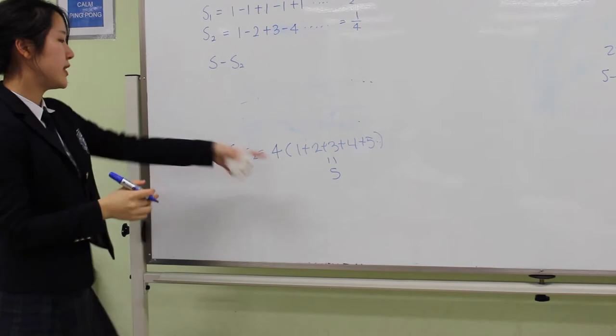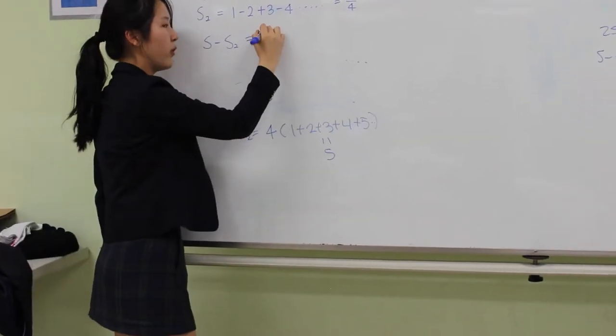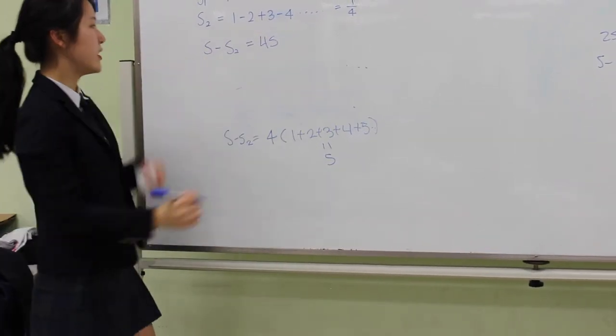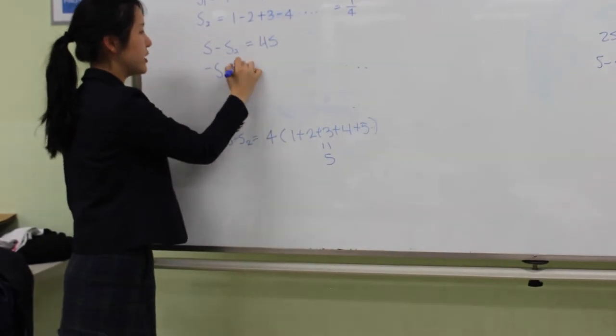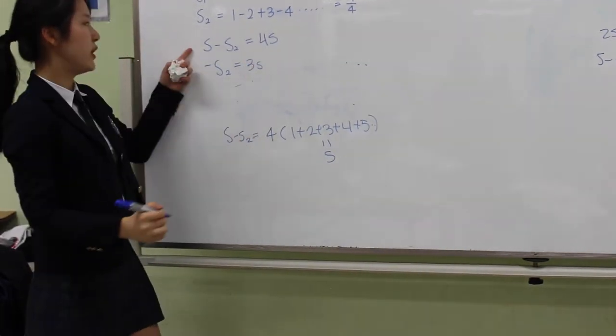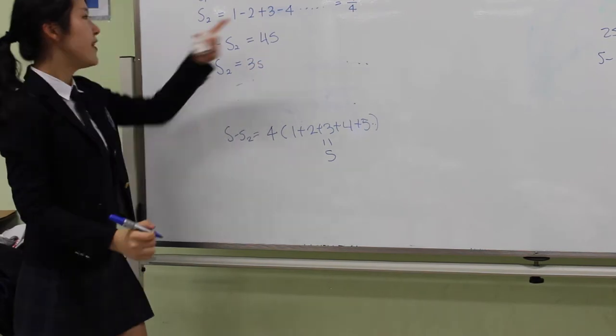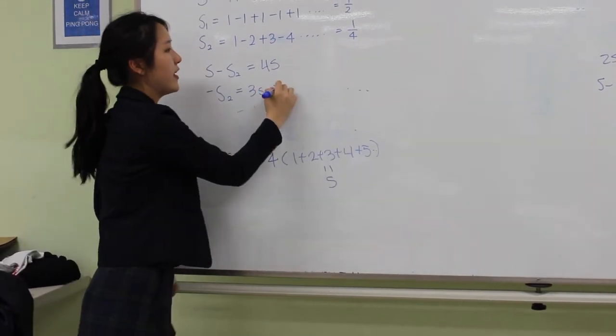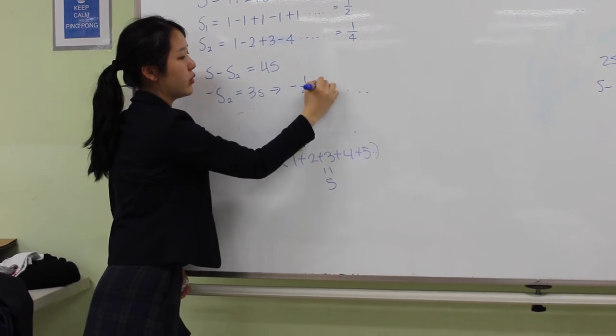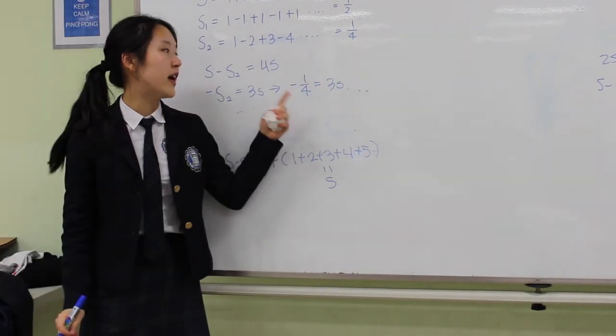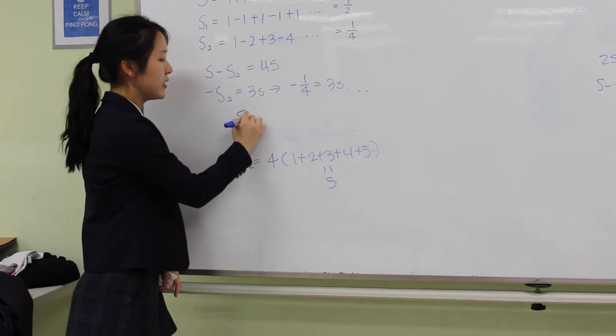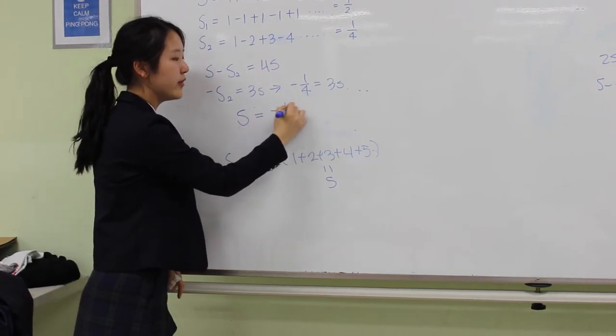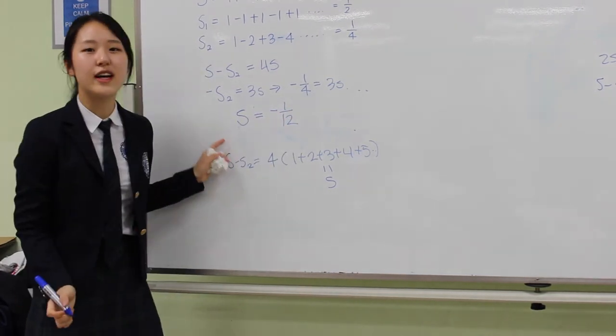So, we can say that S minus S2 is equivalent to 4S. Now, if we move S to this side, it means negative S2 is equal to 3S, because we subtract S from both sides. And now, we've got that S2 is equal to 1 over 4, so we can say that negative 1 over 4 is equal to 3S. If we divide 3 from both sides, it shows S equals negative 1 over 12. And that is the summation of all natural numbers.